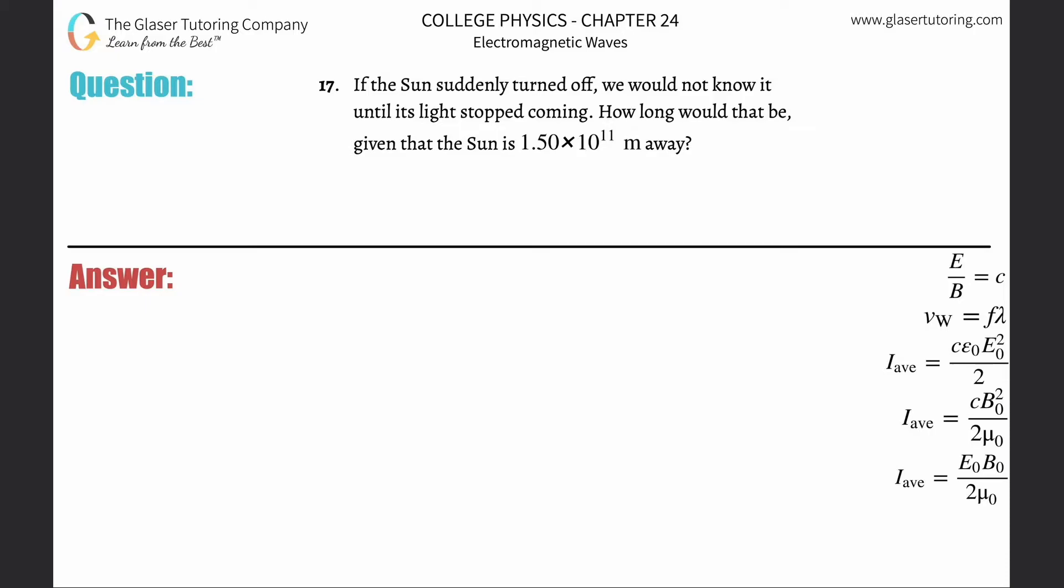Number 17: If the sun suddenly turned off, we would not know it until its light stopped coming. How long would that be if the sun is 1.5×10^11 meters away? Alright, so...